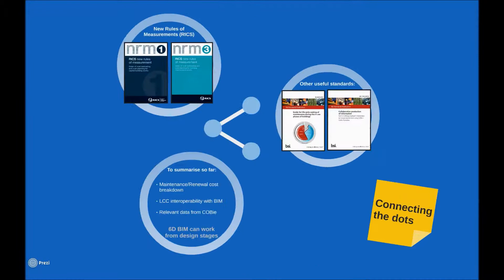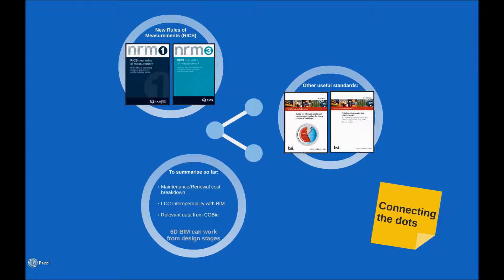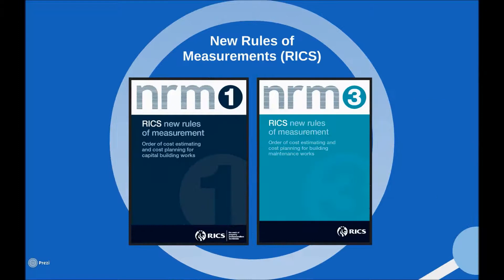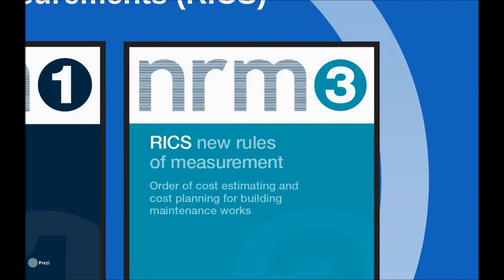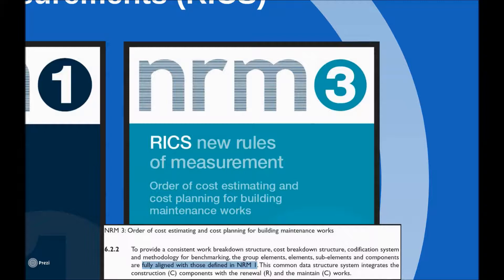Now we believe that there are some tools out there that should help us out and this is just a matter of connecting the dots between all of them. You will recognize the document on the left-hand side — that is the NRM1 document that Paul was talking about previously. On the right-hand side is the NRM3 document, which provides the rules of measurement for maintenance and renewal costs, which form the lifecycle costing. Inside that document is the following phrase: NRM1 can be mapped to NRM3, which means that going from the NRM1 cost breakdown for CAPEX, we should be able to get the NRM3 cost breakdown for OPEX relatively easily.